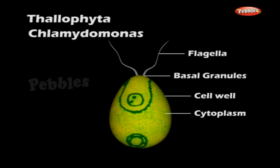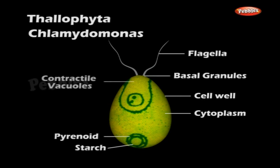Usually, a single proteinaceous pyrenoid with starch sheath is present in each chloroplast. At the place of the flagella, there are two contractile vacuoles. There is a photoreceptive organ, the eye spot, at the anterior lateral end, which is supposed to be concerned in directing the movements of the flagella.